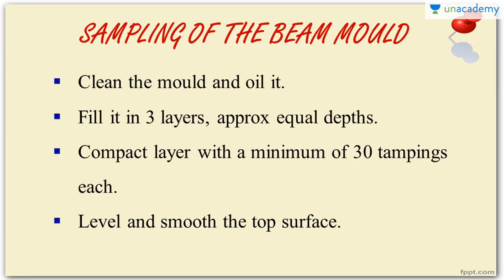Now let's see the sampling of the beam mold. First, clean the beam mold and oil it. Fill the beam mold with concrete in three layers of approximately equal depths. Compact each layer with a minimum of 30 tampings using the tamping bar, distributed equally throughout the concrete. Once the molds are filled, level the top surface and clean the sides. There should be no protruding coarse aggregates, extra water, or extra cement on the top surface — make it level and give a small finish.